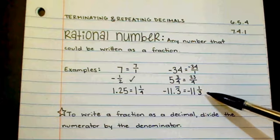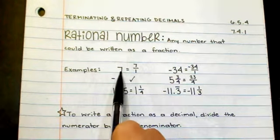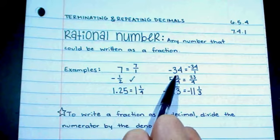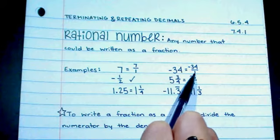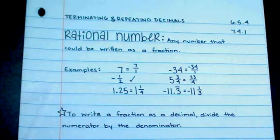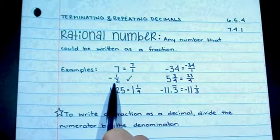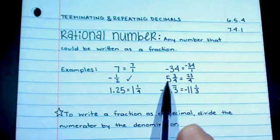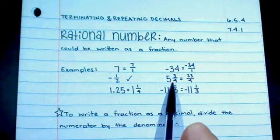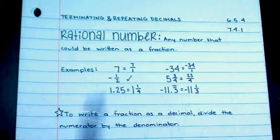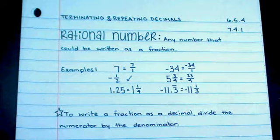Here are some examples of rational numbers. Whole numbers can be written as a fraction by putting them over 1. A negative whole number could also be written as a fraction over 1, so both positive and negative whole numbers are rational numbers. A fraction, even though it's negative, is already expressed as a fraction, so that certainly is a rational number, as well as a mixed number. You could change it to an improper fraction, but it's already in fraction form. Some decimals can also be expressed in fraction form.